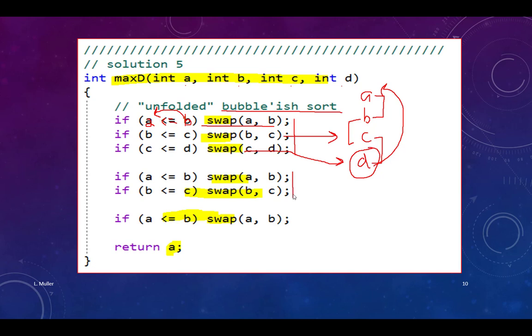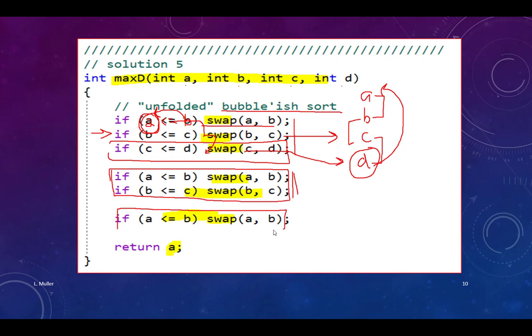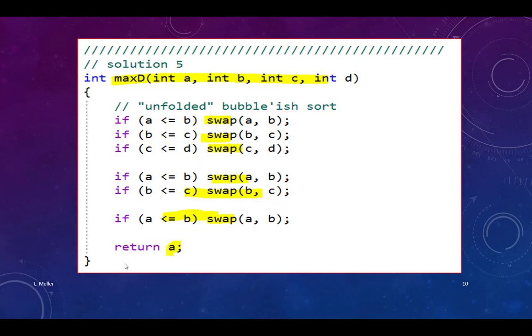I don't have to run it all the way because the bottom is already taken care of, if a was the smallest one, it would be swapped right away. But the top one might be only here. So I have to do this two more times. And then once more after that. And it guarantees, if I did it right, a will be the maximum value.